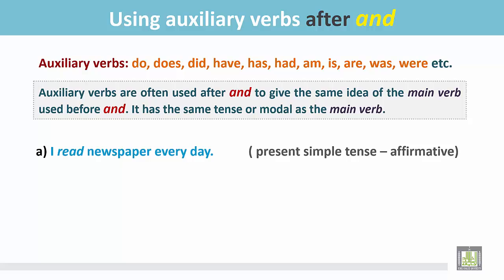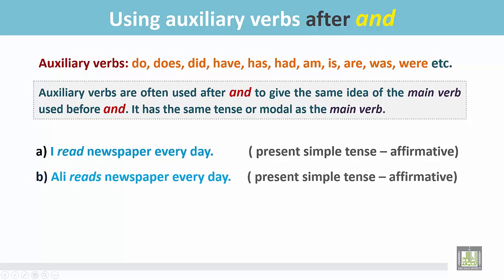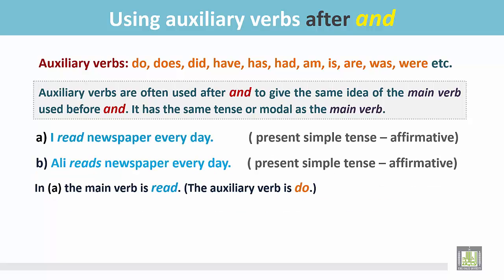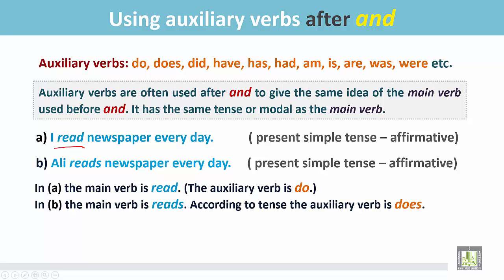Sentence A: 'I read newspaper every day.' This sentence is in the present simple and in the affirmative form. The main verb is 'read.' Sentence B: 'Ali reads newspaper every day.' This sentence is also in the present simple and affirmative form. Both sentences express the same idea. In sentence A, the main verb is 'read' and the auxiliary verb is 'do.' In sentence B, the main verb is 'reads' and the auxiliary verb is 'does.'